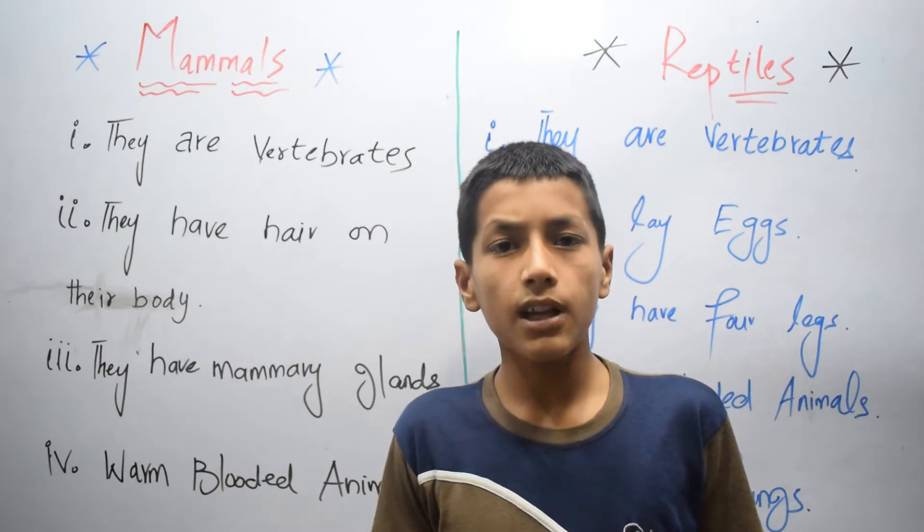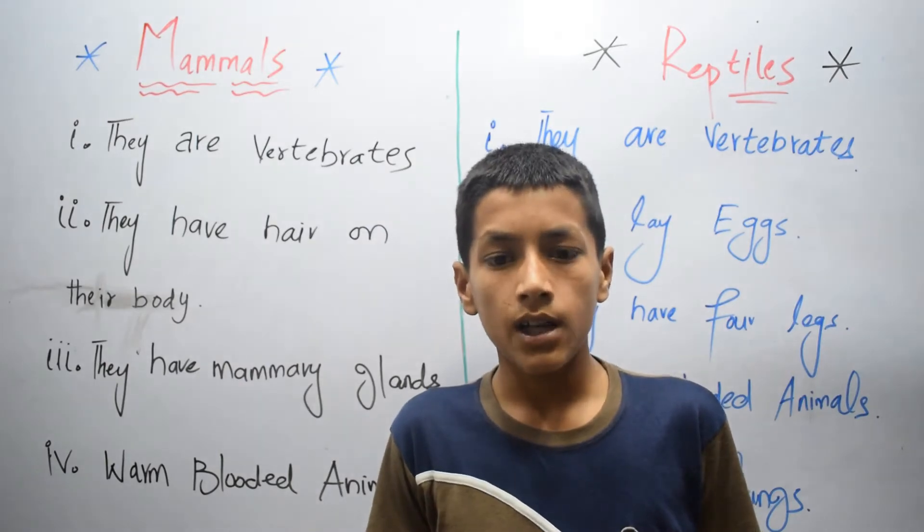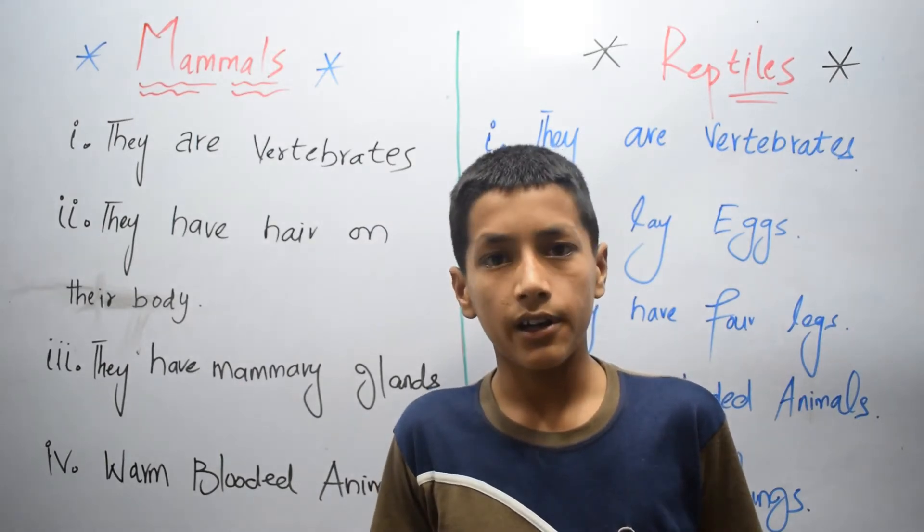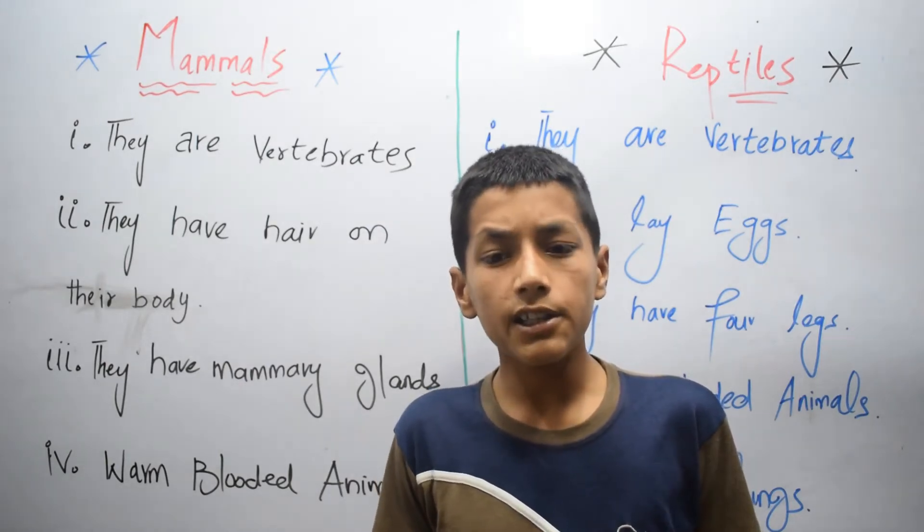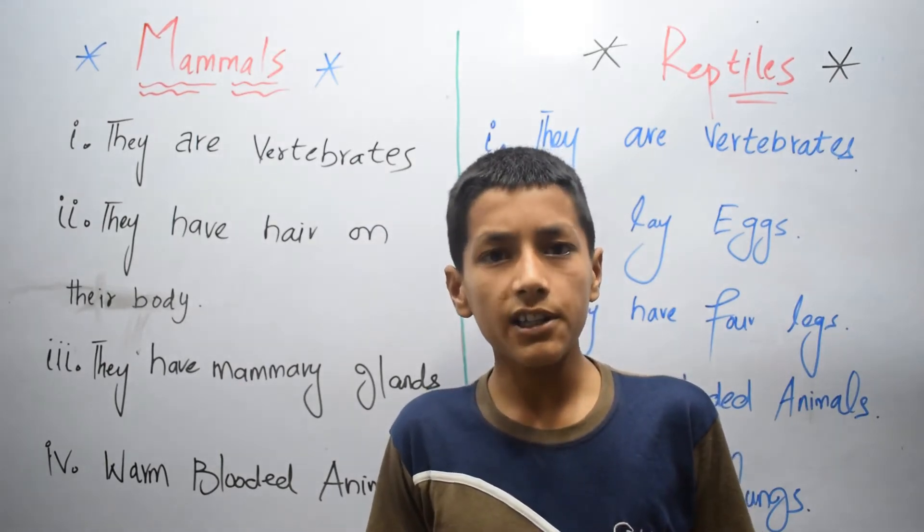For example, for humans, the internal body temperature is 37 degrees centigrade.